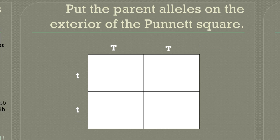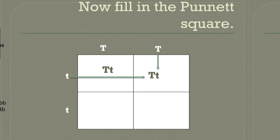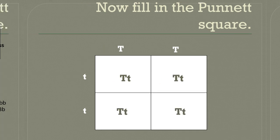On your paper, draw a Punnett square with four squares inside. Put the homozygous tall parent's genes on the top and the homozygous short parent's genes on the other side. Now we're going to fill in our Punnett square. The first big T from the parent on the top comes down and the small t from the parent on the side comes across — so in this box we've got big T, small t. Then we do the same thing for each remaining square: big T comes down, small t comes across.